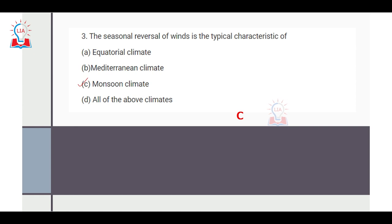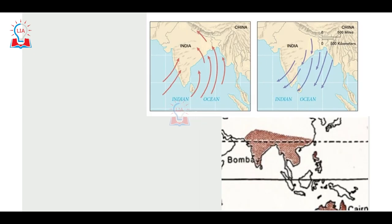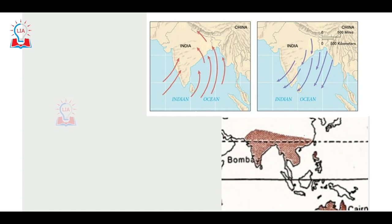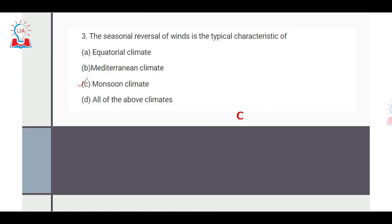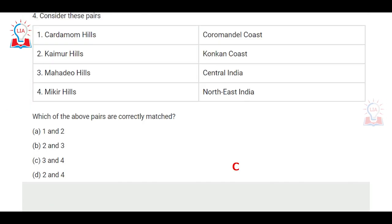The seasonal reversal of wind is characteristic of monsoon climate. The word 'monsoon' in English is derived from the Arabic word 'mawsim', which means seasonal reversal of wind. Looking at the Indian subcontinent, during summer the winds are southwesterly, moving from sea to land, while in winter the winds move from land to sea and are northeasterly. The shaded region on the map represents areas with monsoon climate. So the correct answer is C.